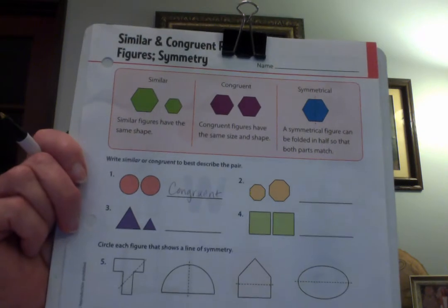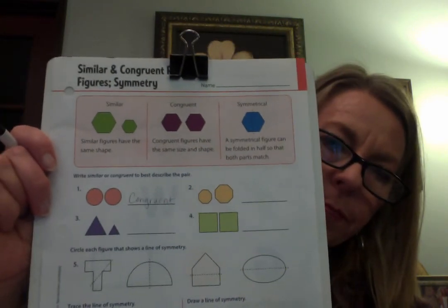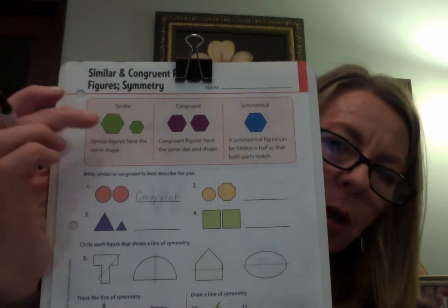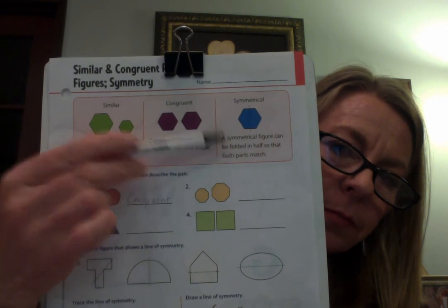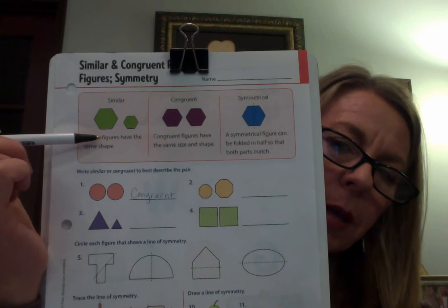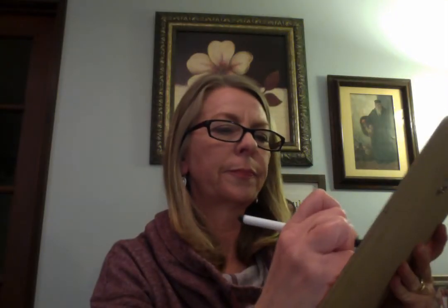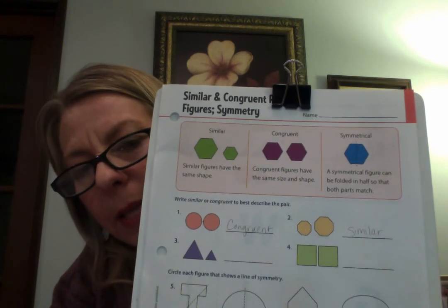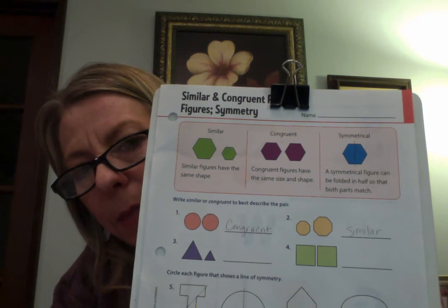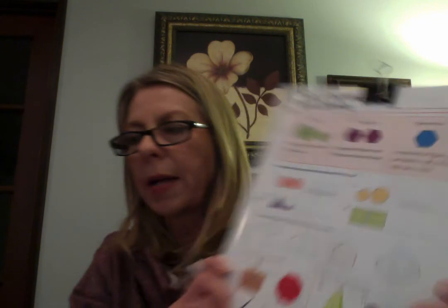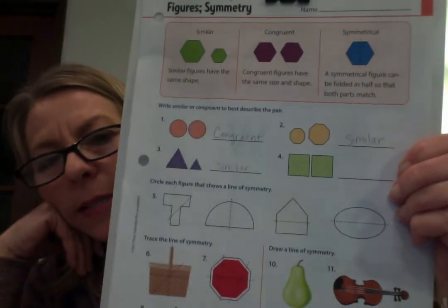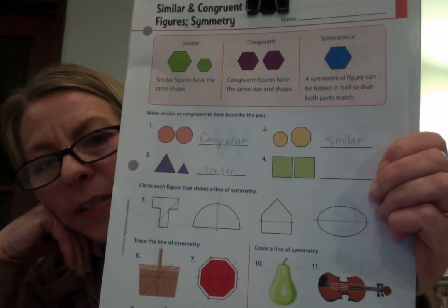Number two has a couple of octagons — are they the same shape? Are they also the same size? If they're only the same shape, we use the word similar. Similar has the same shape but not the same size — so you would write 'similar.' Number three has two triangles — they're the same shape but not the same size, so the answer is similar. Then number four has two squares that look exactly the same — same size, same shape — so we would describe that as congruent.